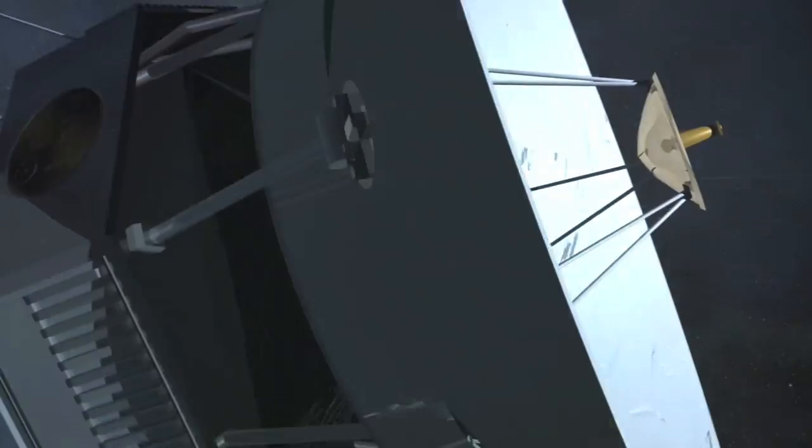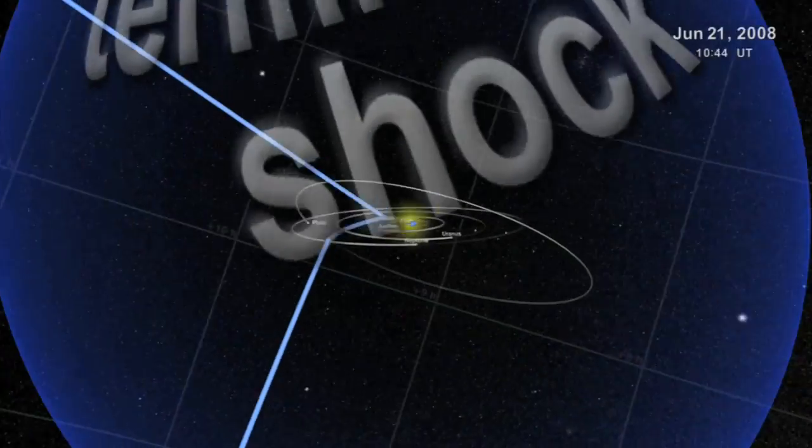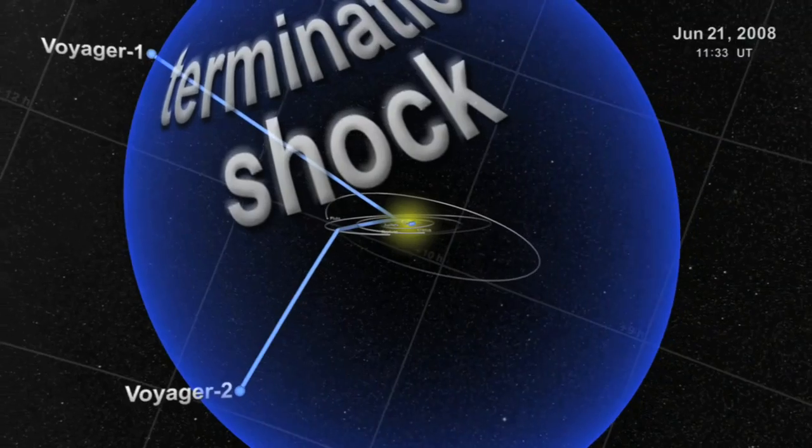Now as the twin spacecrafts explore the outer reaches some 9 billion miles away from Earth, they have crossed the heliosphere, the bubble of supersonic solar wind.